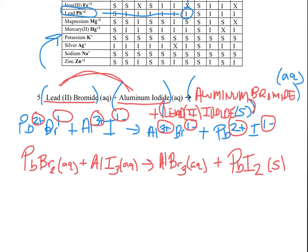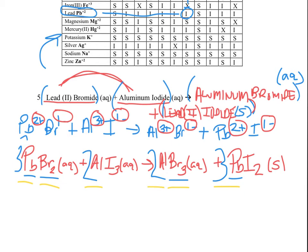Now that we have that, let's balance this out. One lead, one lead. Two bromides and three bromides — so 2 and 3 means we need to make them both 6. I'll drop a 3 here, making 6 bromides, and put a 2 there. By doing that, that makes three leads, so I'll put a 3 here — but that makes 6 iodides, so I'll put a 2 here. Checking: 3 leads, 3 leads; 6 bromides, 2 times 3 is 6 bromides; 2 aluminum, 2 aluminum; 2 times 3 is 6 iodides, 3 times 2 is 6 iodides. We're all balanced — coefficients 3, 2, 2, 3. Awesome.